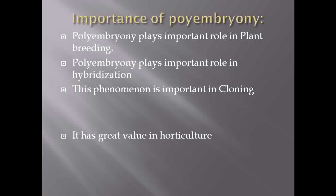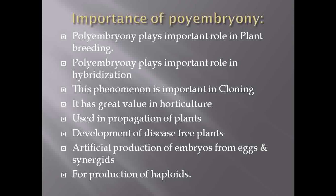Now the importance of polyembryony. Polyembryony plays a very important role in plant breeding. It plays an important role in the process of hybridization. By using polyembryony we are able to make clones and develop different horticultural crops that look similar. Polyembryony is used for propagation of plants. Plants formed after the process of polyembryony are basically disease-free. By polyembryony we can produce artificial embryos from egg cells, synergid cells, or antipodal cells. Polyembryony is also useful for production of haploids as well as diploids.